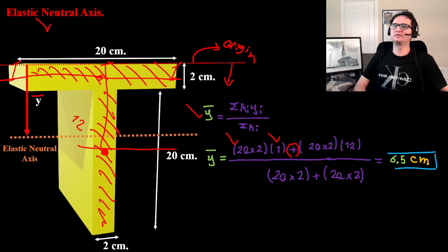And that gives us 6.5 centimeters. That's elastic neutral axis.